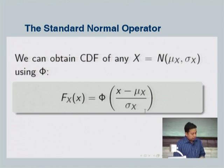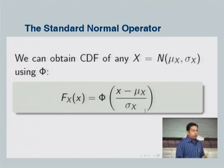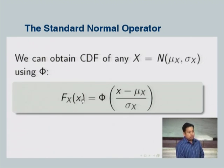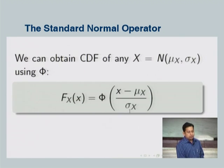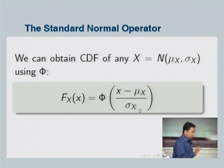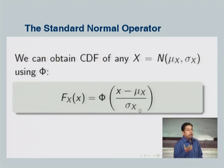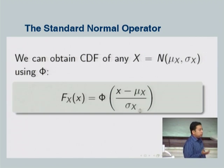The CDF of any normal random variable x with mean mu_x and standard deviation sigma_x can be written as the CDF of the standard normal evaluated at (x minus mu_x) divided by sigma_x. This is just the standard form z = (x − mu_x) / sigma_x. So F_x(x) equals phi(z) — capital phi at z. You use this property to find the CDF for any normal random variable with non-zero mean and non-unit standard deviation.